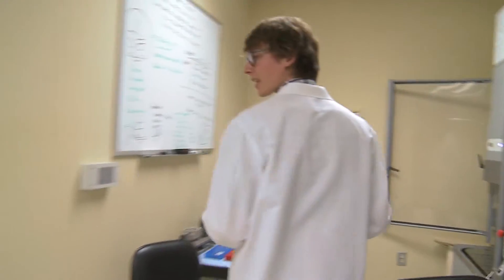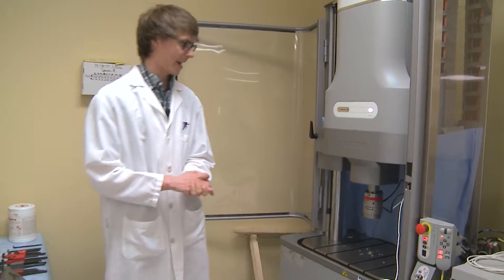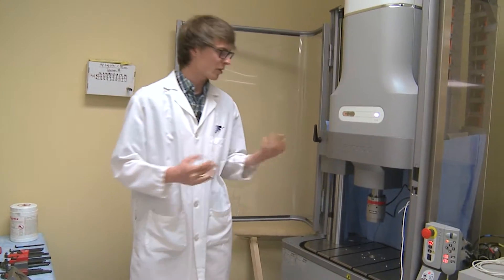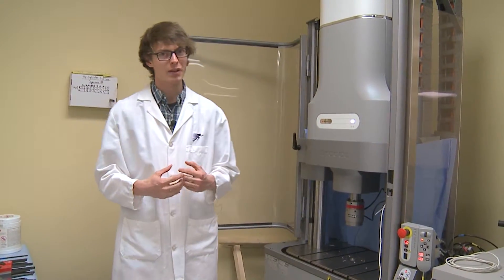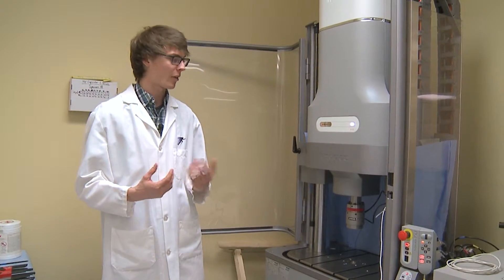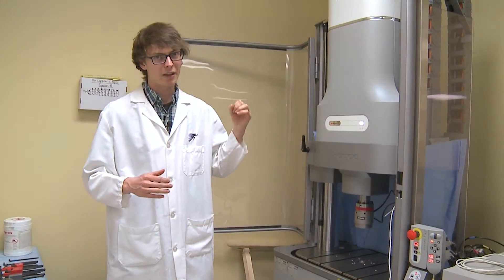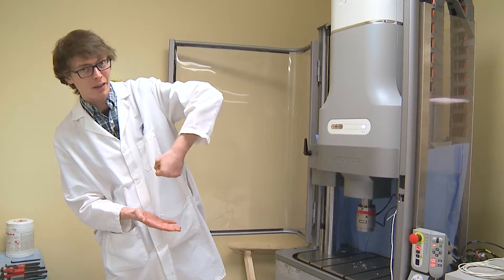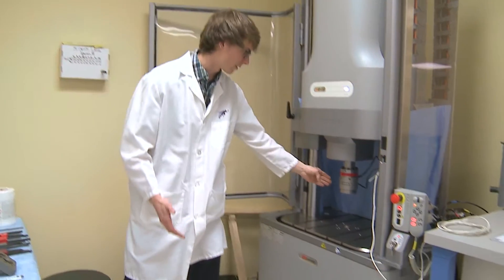Our other main machine is the Instron which is this machine here. So it's also a robot but instead of having the six degrees of freedom that we saw earlier on the robotic arm, this robot has only two degrees of freedom and those are twisting this way and pushing and pulling that way with this device here.